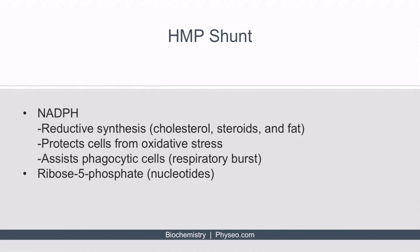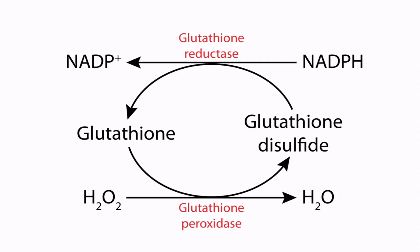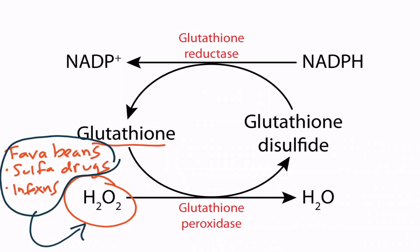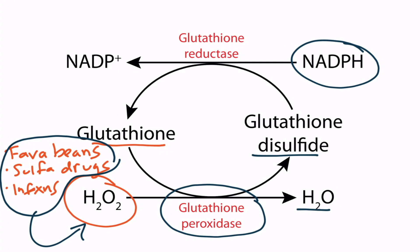Now let's discuss how NADPH protects cells from oxidative stress. This is a figure showing the interplay between glutathione and NADPH. Glutathione is present in red blood cells and protects the cell from oxidative damage. Triggers of oxidative damage include fava beans, sulfa drugs, or infections. Regardless of the trigger, hydrogen peroxide is produced in the red blood cells. The enzyme glutathione peroxidase neutralizes the hydrogen peroxide into water and generates glutathione disulfide. In order for glutathione to be regenerated, NADPH must be used — glutathione reductase uses NADPH to regenerate glutathione.